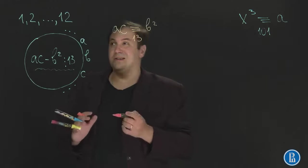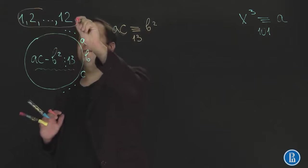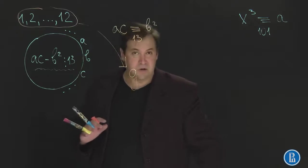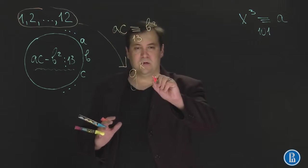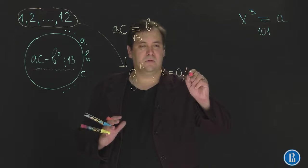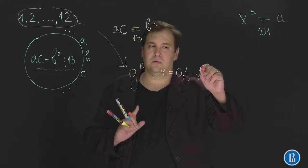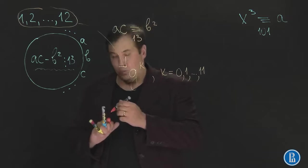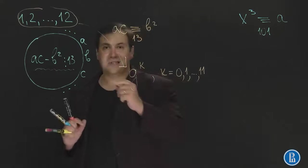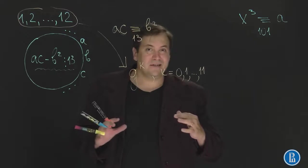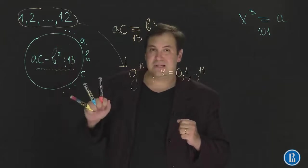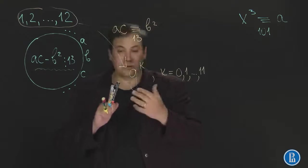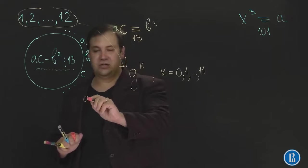But how to form a geometric progression modulo 13? Well, we know that each of these elements is represented as primitive root to some power k where k is equal from 0 to 11, because g to the power of 12 is equal to g to the power of 0 is equal to 1. Each of these elements is some power of g, and if we need a geometric progression consisting of these elements then all we need to do is form an arithmetic progression consisting of powers.